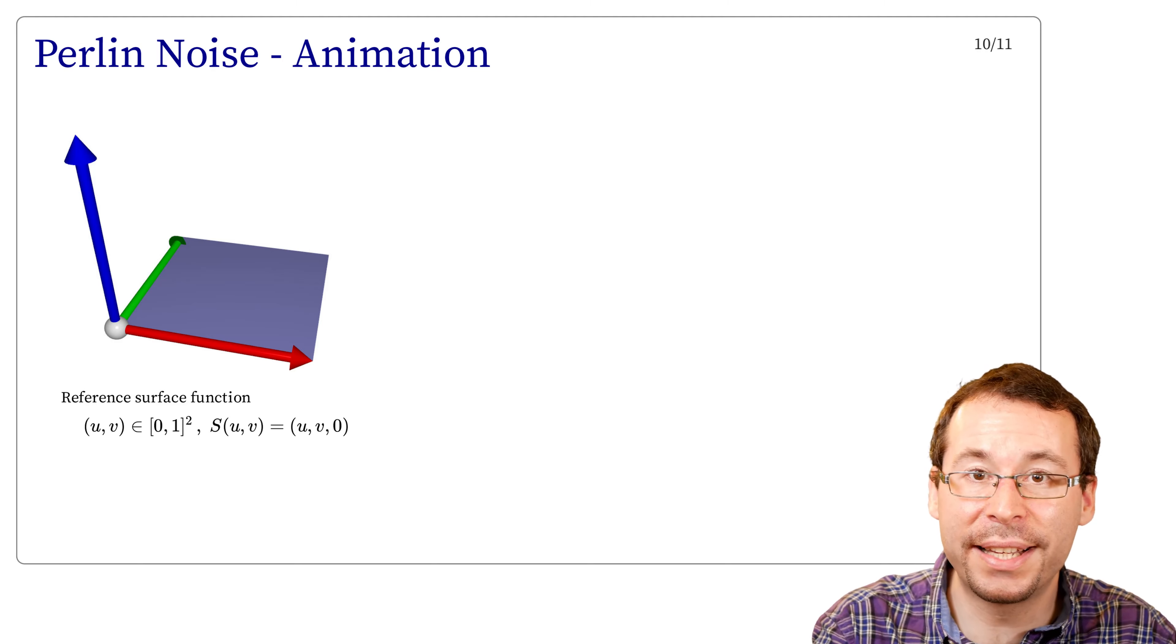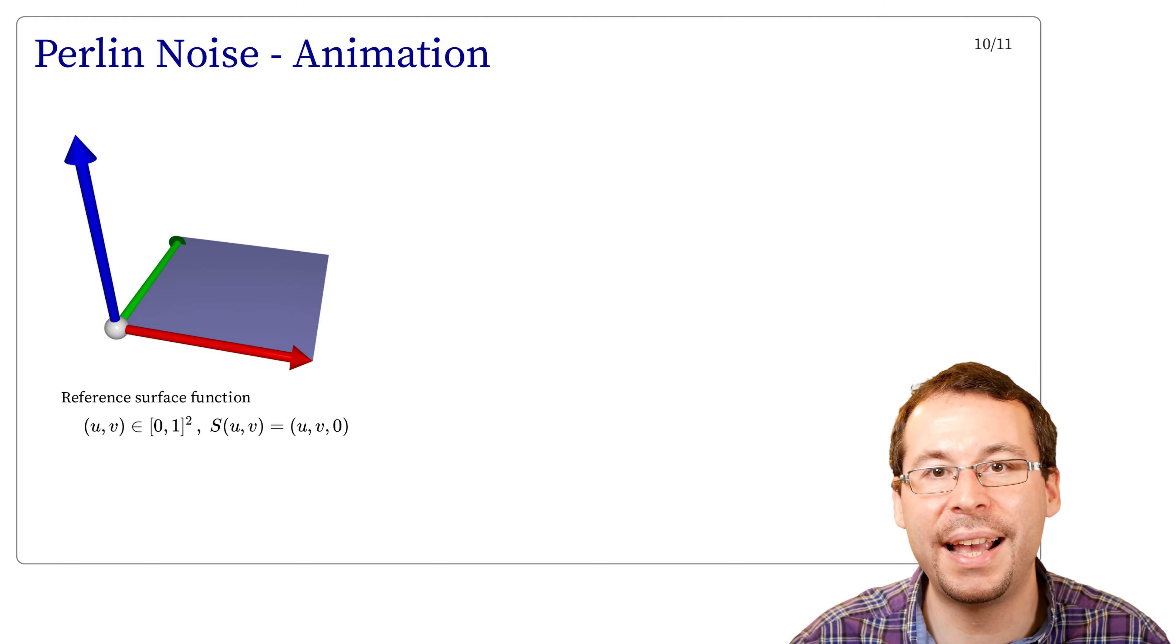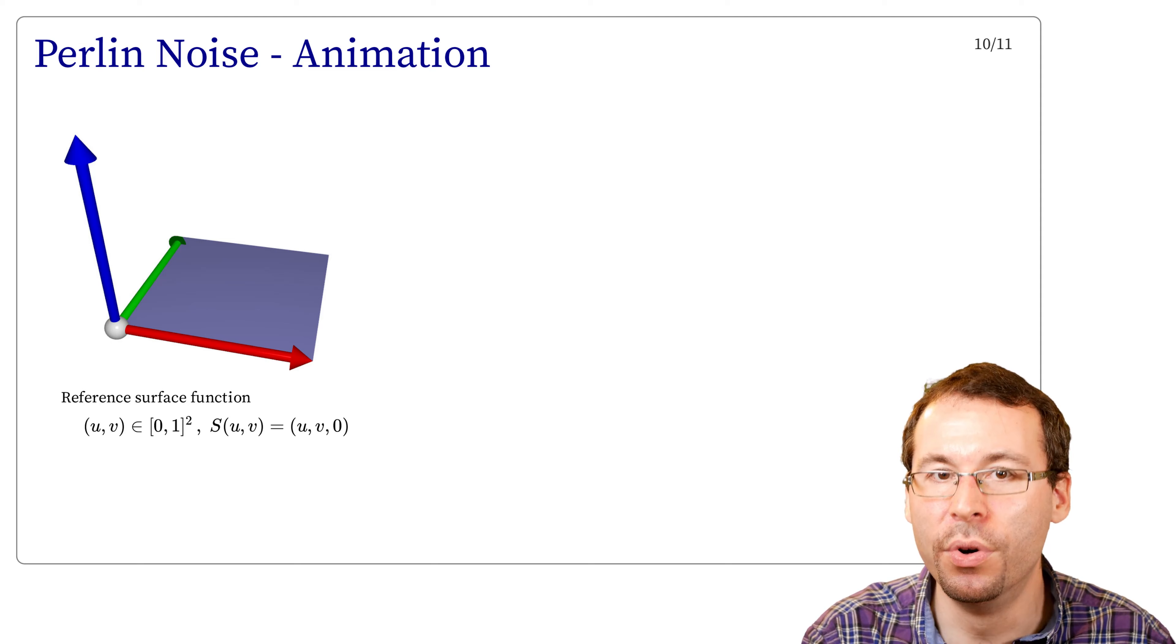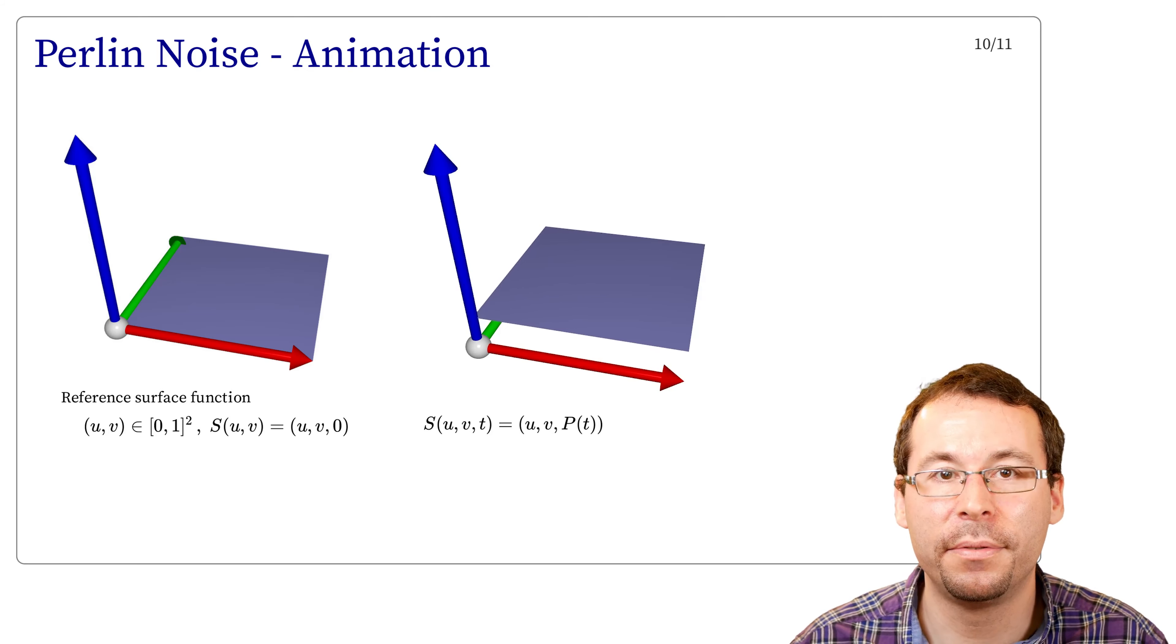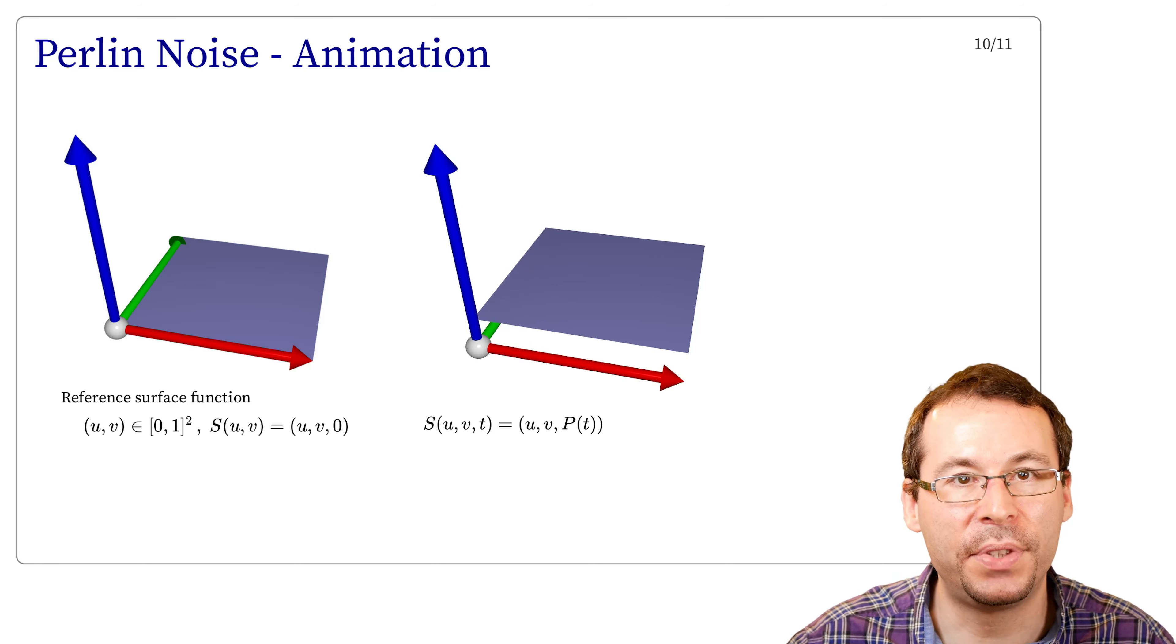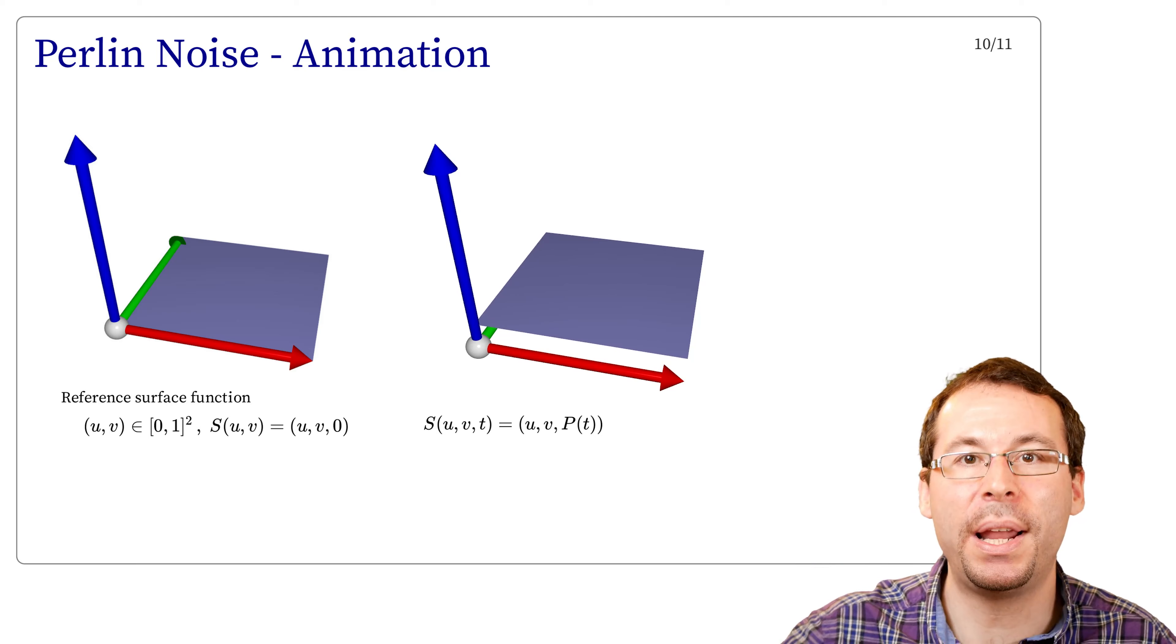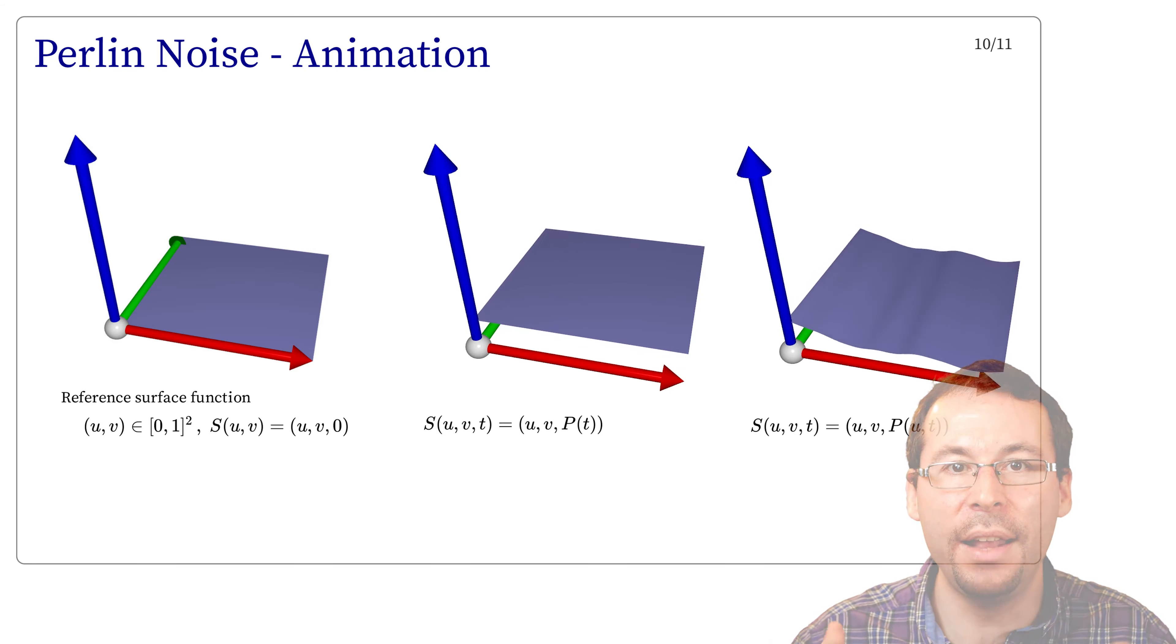And now this is a second exercise with Perlin noise but with animation. So I start with a simple surface given as s(u,v) is equal to (u, v, z) where z is equal to 0. So this is a plane in the x, y direction. Then we can actually add a Perlin noise that depends on time. For instance, if I add p(t) in the z component, the plane will move up and down along time, which is shown in the second image. And we can also make the Perlin noise depend on multiple variables, on space and time. So on the right we can see the results where we add a p(u,t) in the z component.